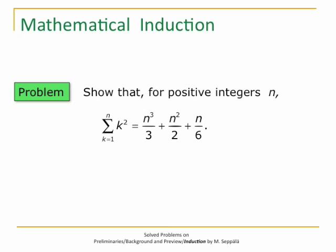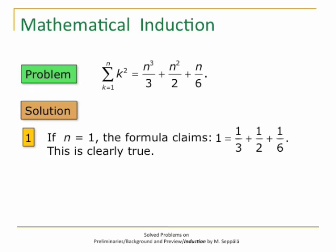In this problem we have to show that for all positive integers N, the sum of squares of integers up to N equals N cubed over 3 plus N squared over 2 plus N over 6. That is, summation k from 1 to N of k squared equals N cubed over 3 plus N squared over 2 plus N over 6. The proof by induction has three steps.